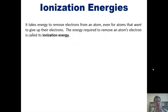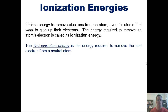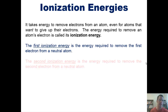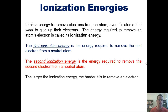So believe it or not, it takes energy to remove electrons from an atom, even for atoms that want to give up their electrons. The energy required to remove an atom's electron is called its ionization energy. The first ionization energy is the energy required to remove the first electron from a neutral atom. The second ionization energy is the energy required to remove a second electron from an atom. The larger the ionization energy, the harder it is to remove an electron.